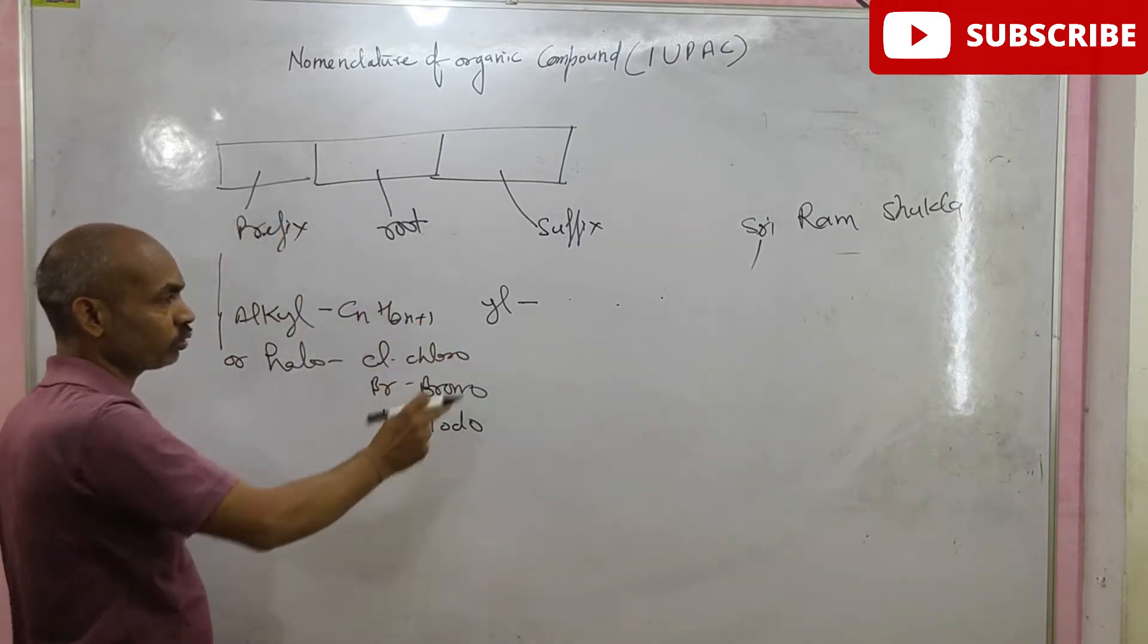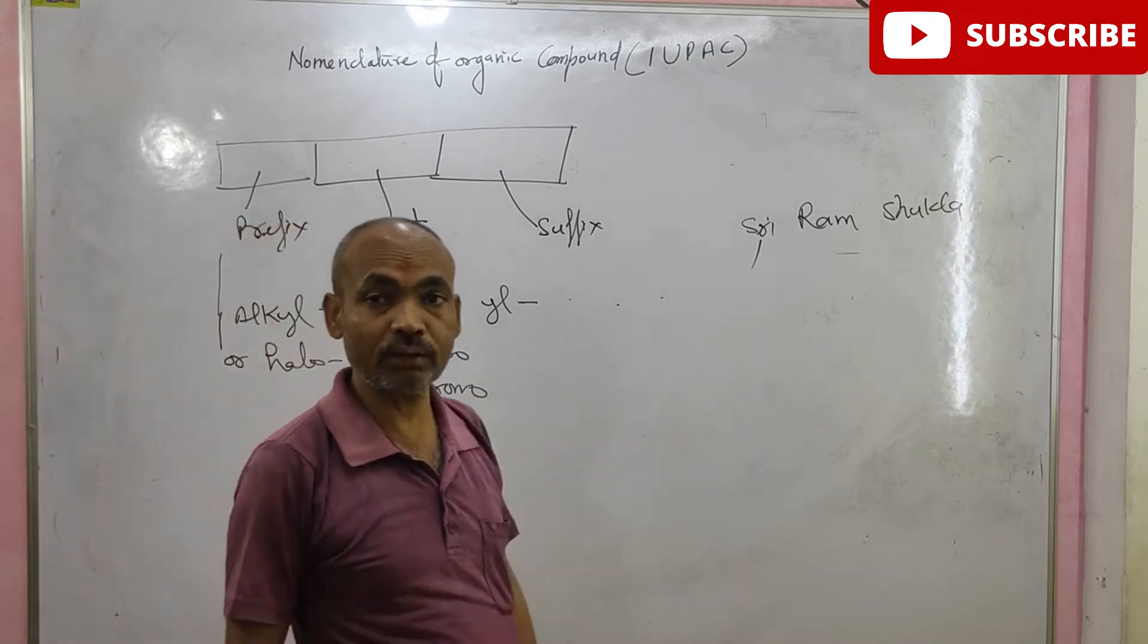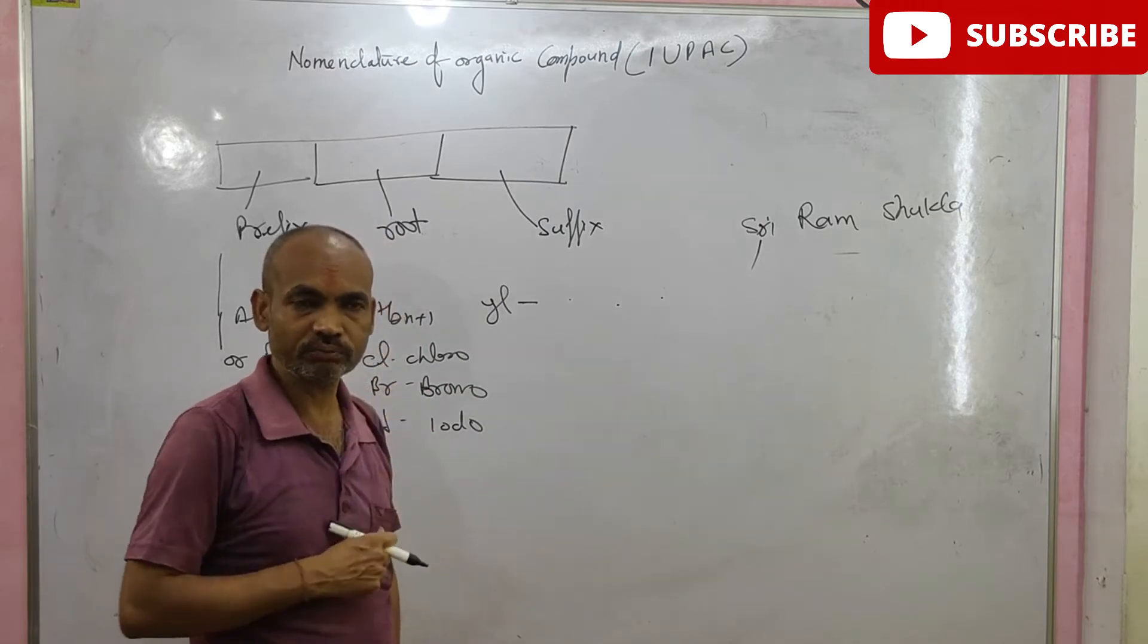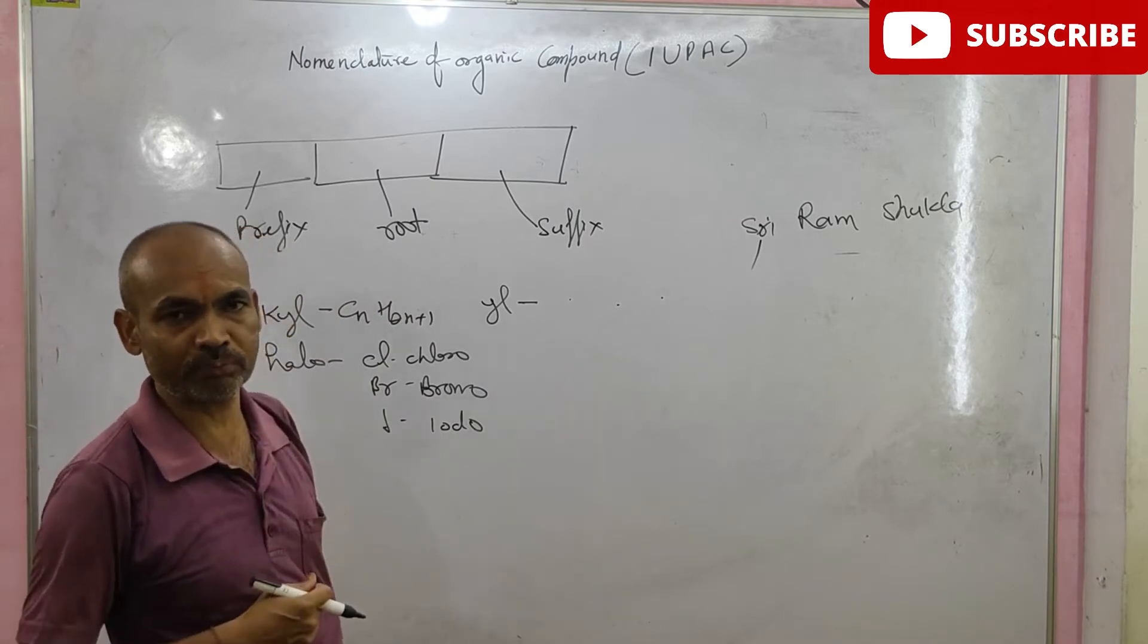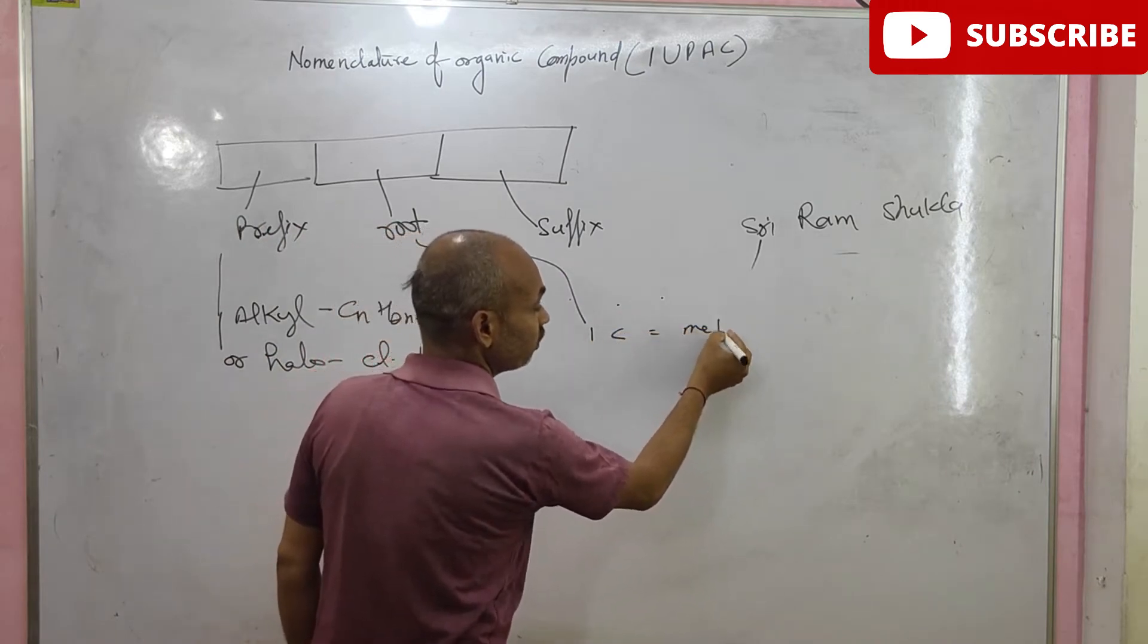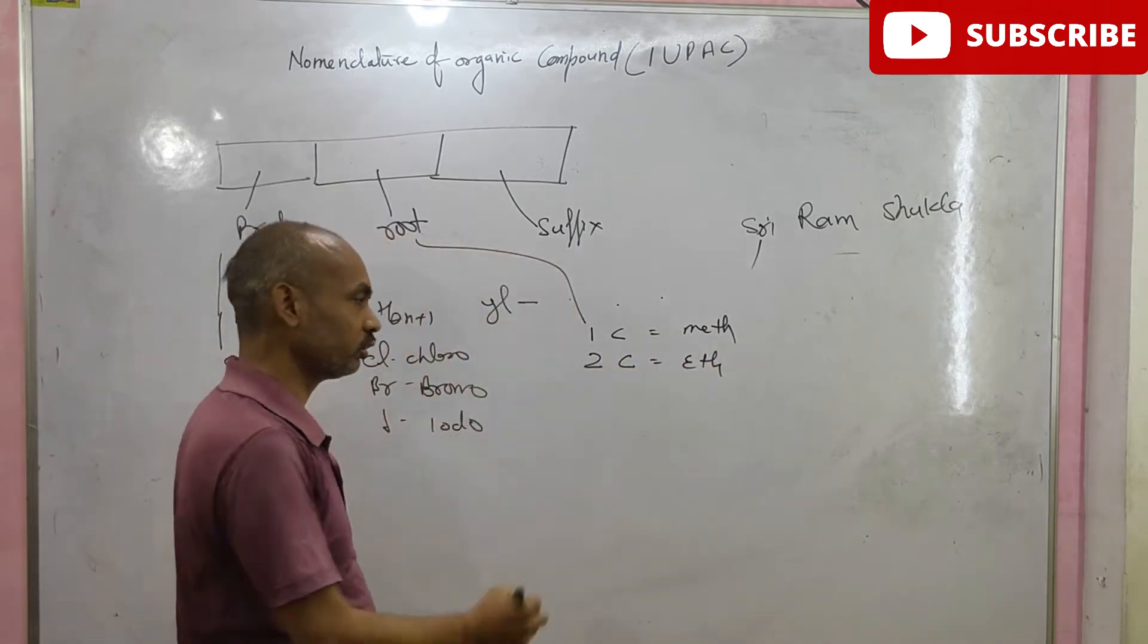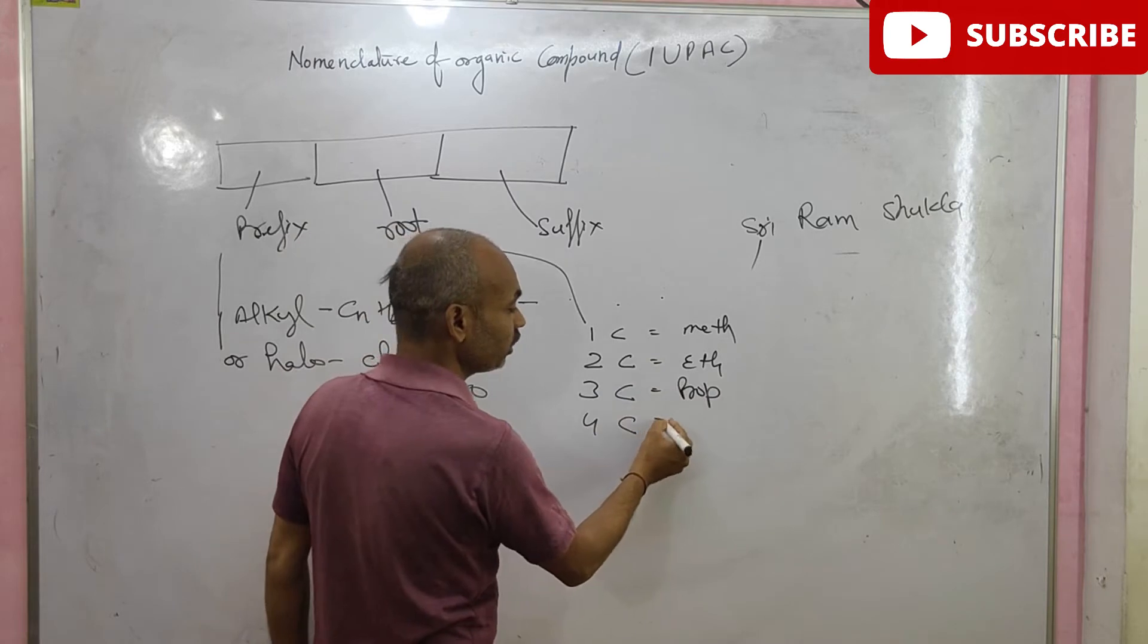And the second point is root. Root depends on the number of carbon present in straight chain. First of all, you find the straight chain. And in straight chain, find out how many carbon atoms are present. If there are one carbon atom, then it is meth. If there are two carbon atoms, then eth. If there are three carbon atoms, then prop. Four carbon atoms, but.